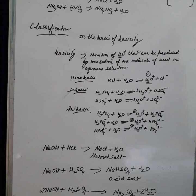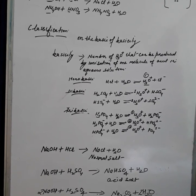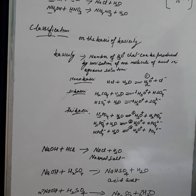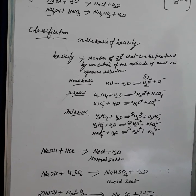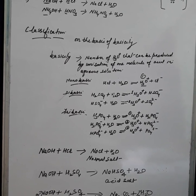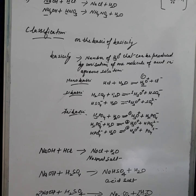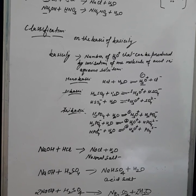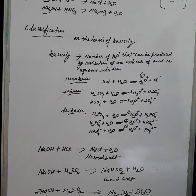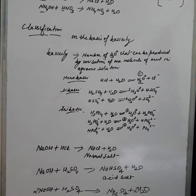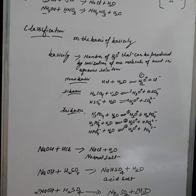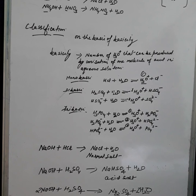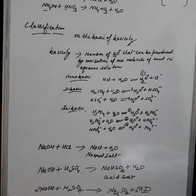Tribasic acids contain three replaceable hydrogen atoms. When they dissolve in water they produce three hydronium ions, and ionization is completed in three steps. Take the example of phosphoric acid: in the first step it forms one hydronium ion plus dihydrogen phosphate; in the second step, dihydrogen phosphate releases another hydronium ion plus hydrogen phosphate; and in the third step, hydrogen phosphate forms the third hydronium ion plus phosphate ion.